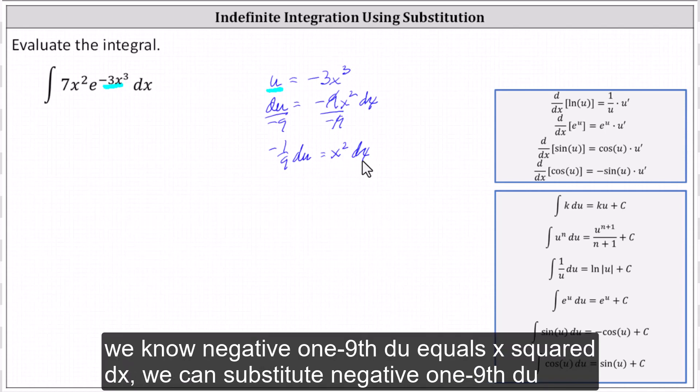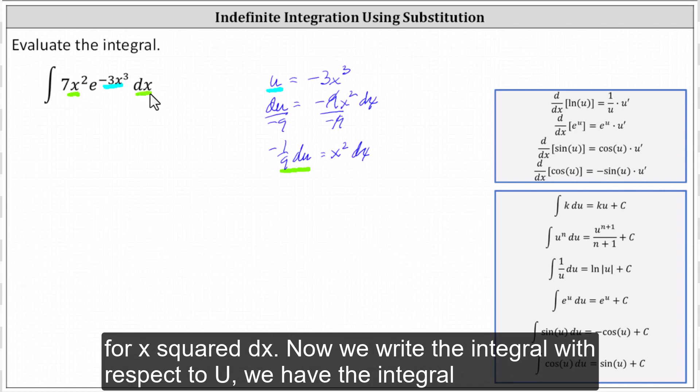Now that we know -1/9 du equals x²dx, we can substitute -1/9 du for x²dx.